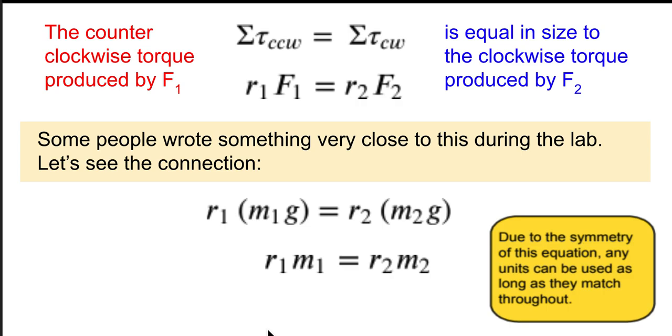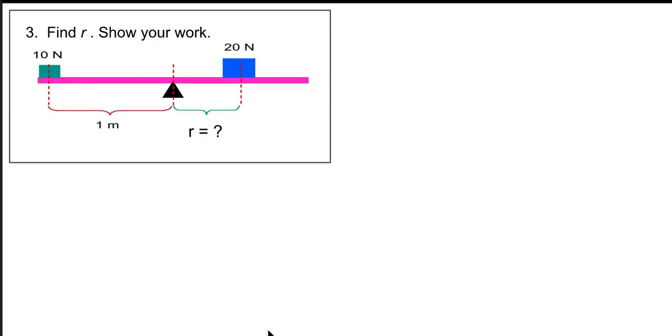Now what's kind of neat about this formula is because we've got r's on both sides and we got m's on both sides, we're not calculating a new value or something like that. We can measure these in any units we want. So we don't actually have to worry about converting unless the two m's aren't in the same unit or the two r's aren't in the same unit. Let's take a look at some examples.